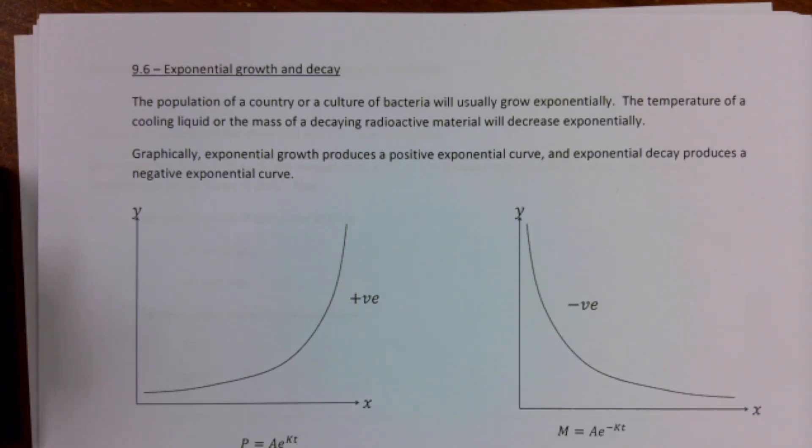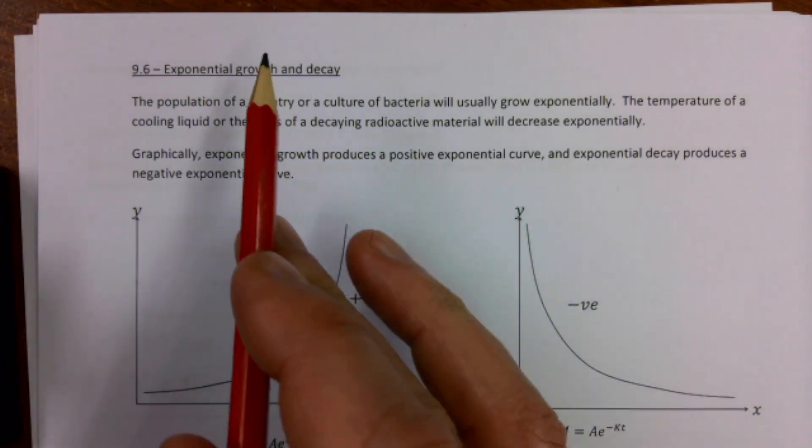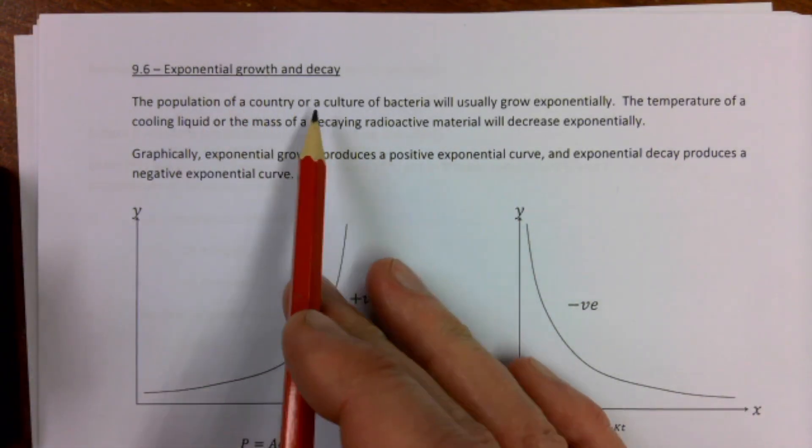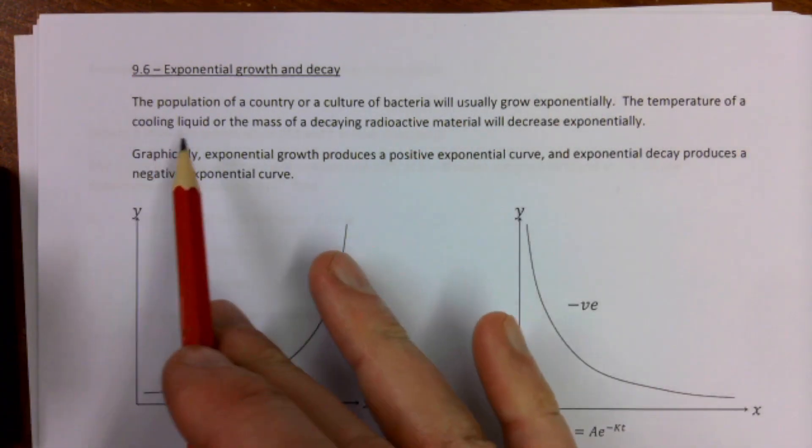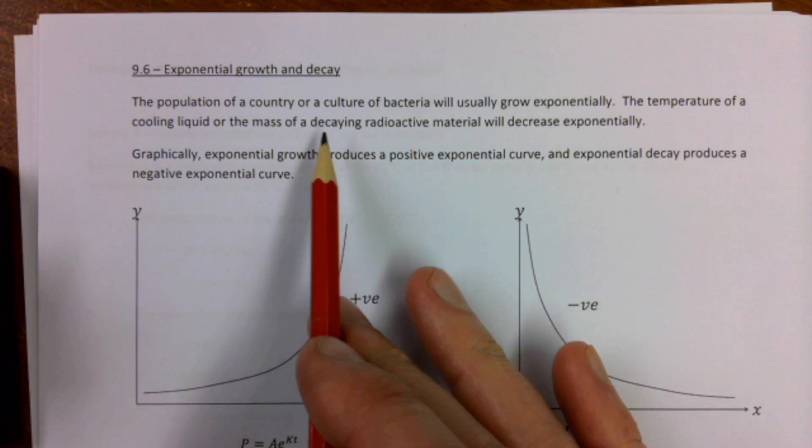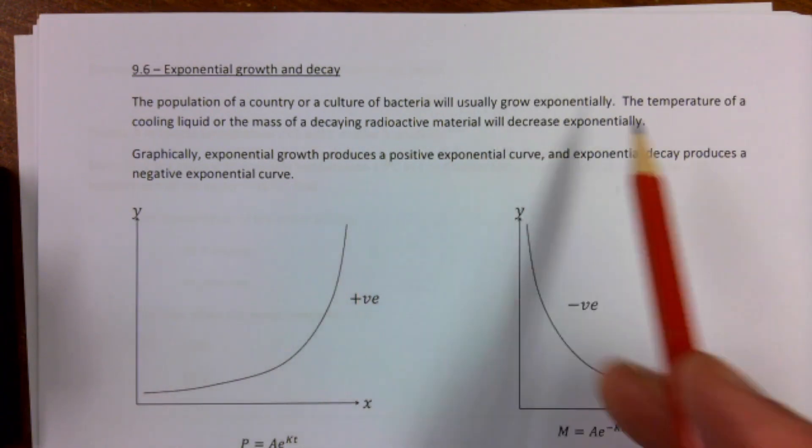This is ASPureNotes. We are on unit 9 logarithms and we're now onto exponential growth and decay. The population of a country or a culture of bacteria will usually grow exponentially. The temperature of a cooling liquid or the mass of a decaying radioactive material will decrease exponentially.